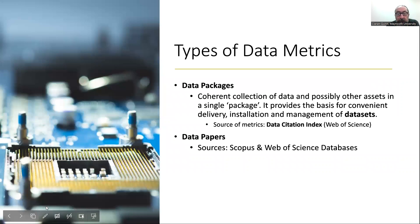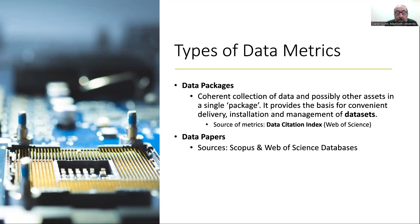So types of data metrics — there are kind of two different ways of measuring. There's the data package itself: a collection of data and other assets in a single package that provides the basis for convenient delivery, installation and management of datasets. This is the data actually stored in a repository, and you can get metrics on that in the Data Citation Index in Web of Science. Then there are data papers, which you'll find in Scopus and Web of Science. A data paper is a descriptor — it describes what the data is about, going beyond the metadata included in the repository. A paper is actually written about it, providing further, deeper levels of description about the data.